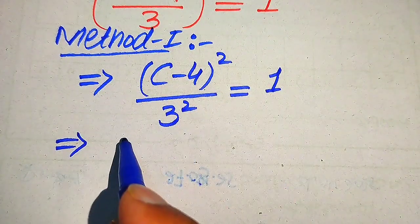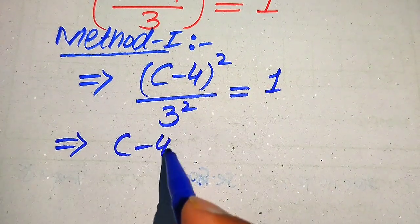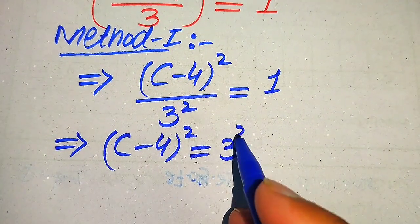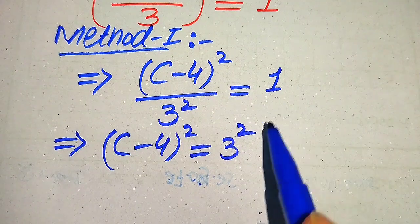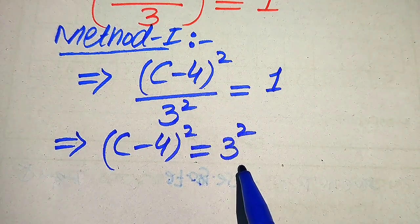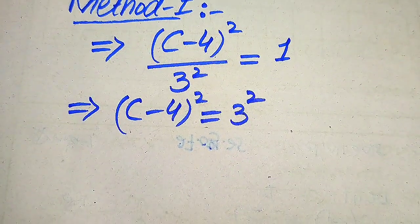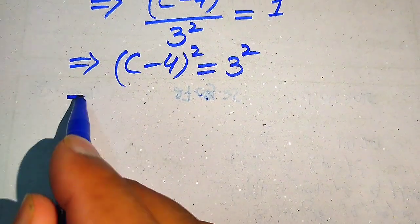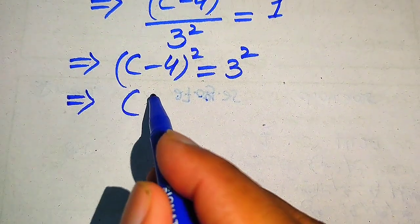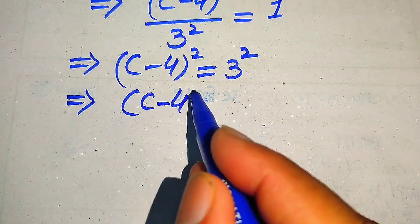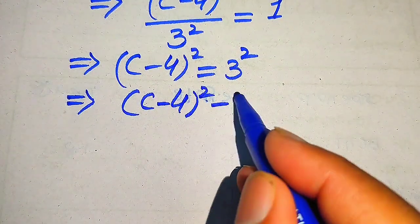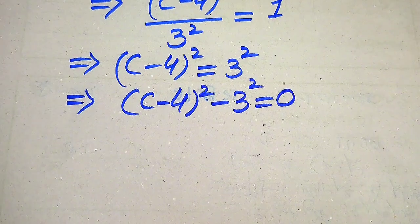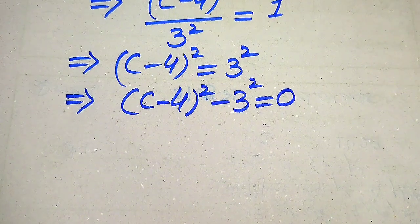In the next step, we move 3 squared to the right hand side, and it will be written as (C minus 4) squared equals 3 squared, because 3 squared multiplied by 1 becomes 3 squared. Then we move 3 squared to the left hand side, giving us (C minus 4) squared minus 3 squared equals 0.